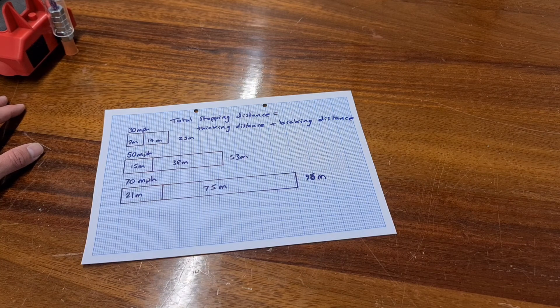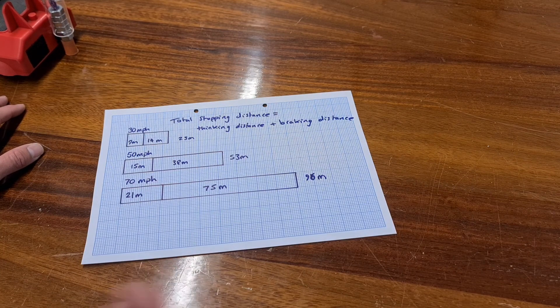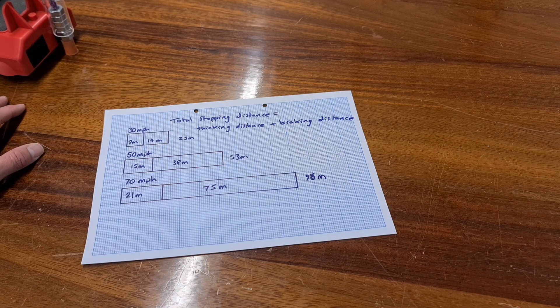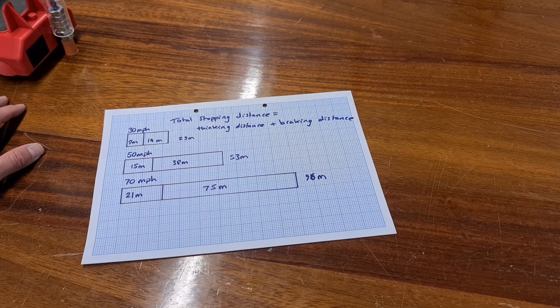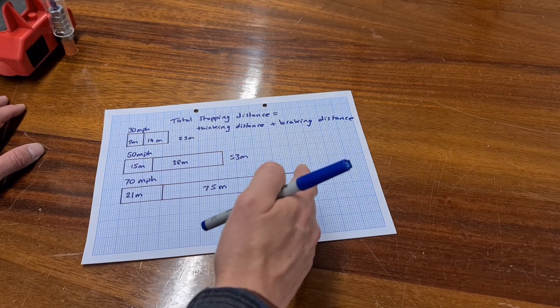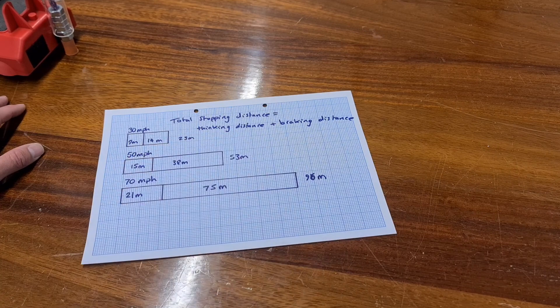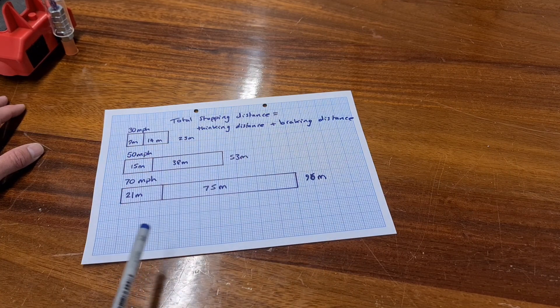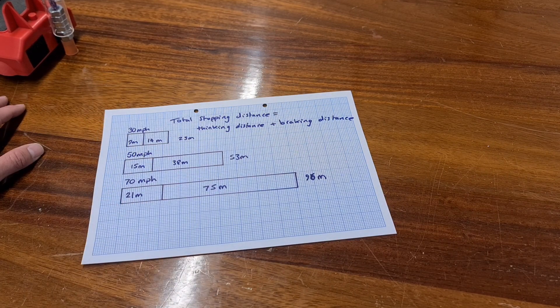But if we were to consider what affects the braking distance, the condition of the tyres, the brakes, the surface of the road. But more than anything, if you want to be able to stop before you hit an object, it makes far more sense just to be driving more slowly.